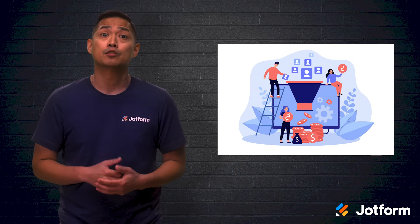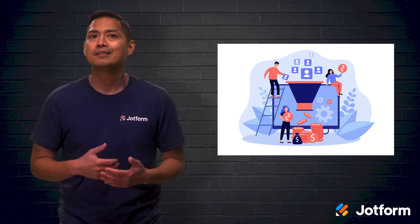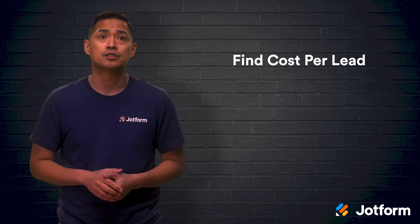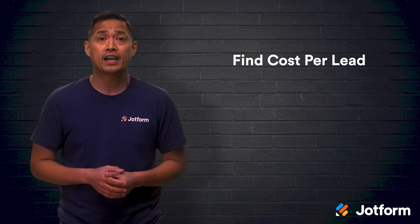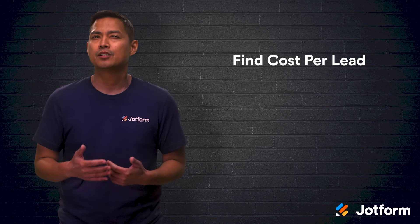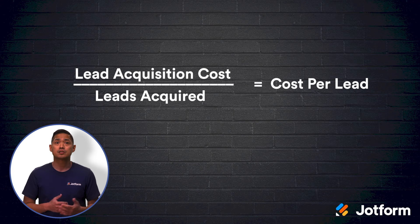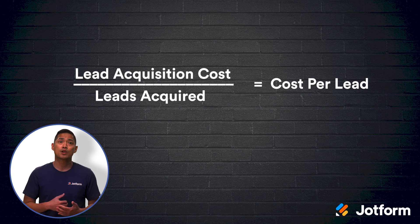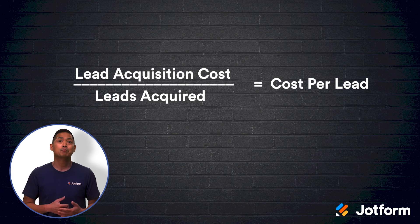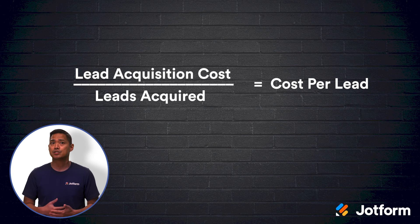To determine the value of each lead, you'll first need to calculate how much it costs to acquire one. Then you can follow these five steps to boost sales via lead value. Your first step is to find the cost per lead. A lower cost per lead means you have valuable content and you're targeting the right audience. Lead acquisition cost is how much it costs to acquire a lead, such as the total spend for a Facebook ad campaign or the cost to produce a blog post that drives traffic through SEO or organic social shares. Leads acquired is the number of leads that a campaign generates — measured as newsletter signups or other criteria that suits your definition of a lead in your sales funnel. Use these two components to calculate your cost per lead: lead acquisition cost divided by leads acquired equals your cost per lead.